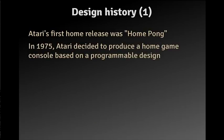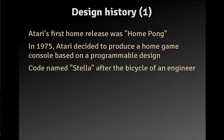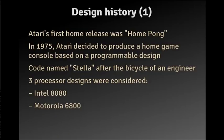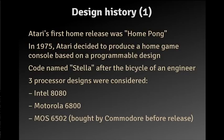In 1975, they decided to produce a home game console based on a programmable design using a CPU. They code-named it Stella, after the bicycle of one of the engineers. When they started designing, three processor designs were considered: the Intel 8080, the Motorola 6800, and the MOS 6502, which was an independent company when design started. Between that and the Atari's release, MOS was bought by Commodore so they could produce the PET computer and later the C64.